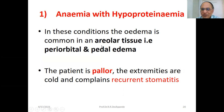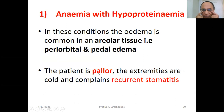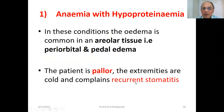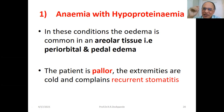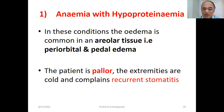In anemia with hypoproteinemia, edema is common in areolar tissue — both periorbital and pedal edema. The patient shows pallor visible in eyes and nails, cold extremities, and complains of recurrent stomatitis. A hemoglobin test is essential — hemoglobin will be less than 8-10 gram percent, compared to the normal 12-14 gram percent.